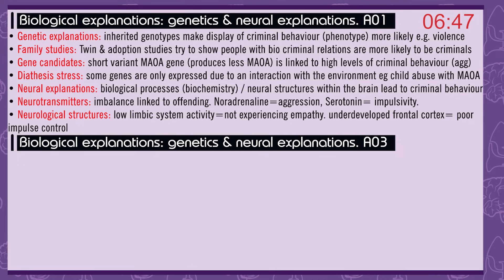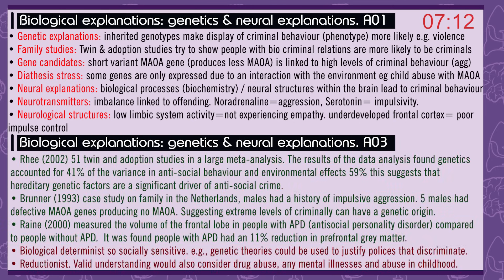Neural explanations: biological processes — biochemistry and neural structures within the brain — lead to criminal behaviour. Neurotransmitters: an imbalance is linked to offending — noradrenaline with aggression, serotonin with impulsivity. Neurological structures: low limbic system activity is linked with not experiencing empathy; an underdeveloped frontal cortex is linked with poor impulse control. Rae, 2002: a large meta-analysis of 51 twin and adoption studies found that genetics accounted for 41% of the variance in antisocial behaviour and environmental effects 59%, suggesting genetic factors are a significant driver. Brunner, 1993: a case study on a family in the Netherlands found the males had a history of impulsive aggression — five males had defective MAOA genes producing no MAOA — suggesting extreme criminality can have a genetic origin. Raine, 2000: measured the volume of the frontal lobe in people with antisocial personality disorder (APD) compared to those without, finding an 11% reduction in prefrontal grey matter in those with APD.